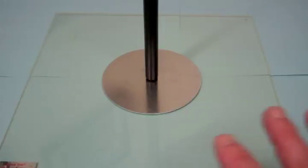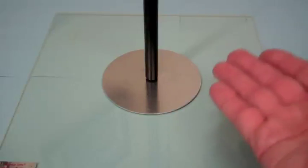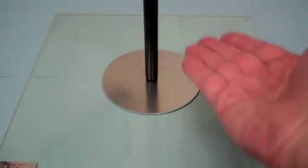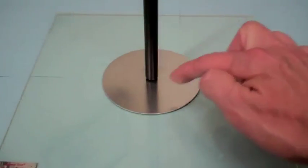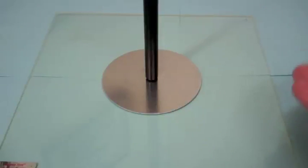So what will happen is the negative charge on the plastic will push the electrons up so that the top part of this plate is going to be negatively charged and the bottom part positively charged.